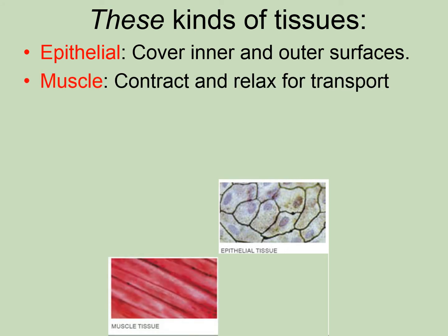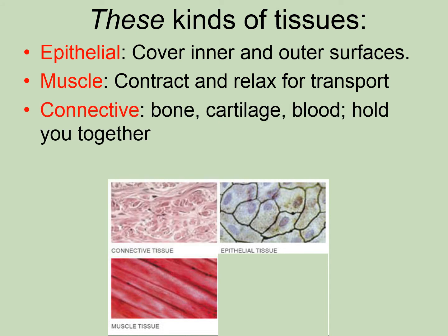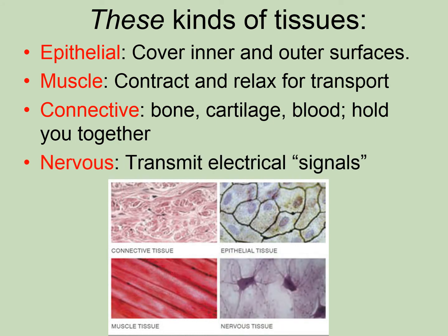Another type of tissue is muscle. Muscle tissue has actinomyosin fibers — protein fibers that interact to contract and relax and help things move around. Just like there are different types of epithelial tissue, there are different types of muscle tissue: striated or skeletal muscle, smooth muscle, and cardiac muscle. Another type of tissue is connective tissue, which holds your body together, as well as nervous tissue that transmits electrochemical signals from one region of the body to the next, helping us respond to changes in the environment.